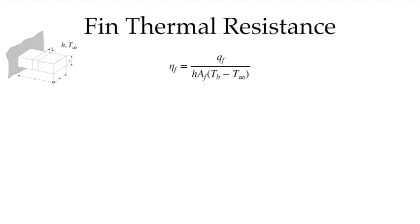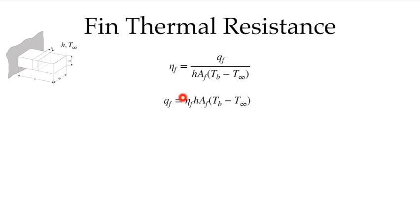From the fin efficiency, we can evaluate the total heat transfer rate through the fin — the heat rejected by the fin. Simply rearranging our definition of the efficiency, this expression gives us the heat transfer in terms of expressions that we know: the convection coefficient, the surface area of the fin, and the base and ambient temperatures. The only thing we don't know is the fin efficiency. We can determine that analytically for special cases, or look it up from many sources — for fins with varying cross sections or different geometries.